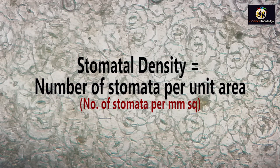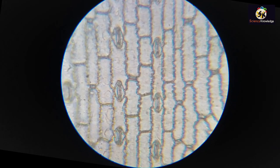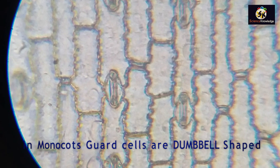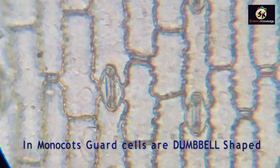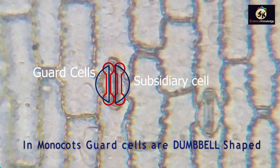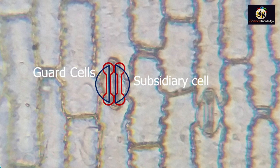The structure can be observed under high power of the microscope. In case of monocot stomata, the guard cells appear to be dumbbell shaped. They are surrounded by subsidiary cells and then in turn the epidermal cells. Epidermal cells are rectangular and have a wavy outline.